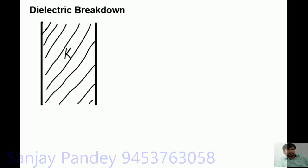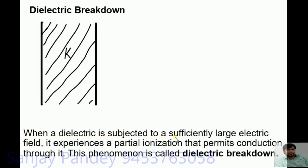Next, dielectric breakdown. Suppose we have a capacitor filled with a dielectric medium. If we increase the potential difference between the plates, a limiting value comes when the dielectric medium starts ionizing and permits conduction through it. This phenomenon is called dielectric breakdown: when a dielectric is subjected to a sufficiently large electric field, it experiences partial ionization that permits conduction through it.